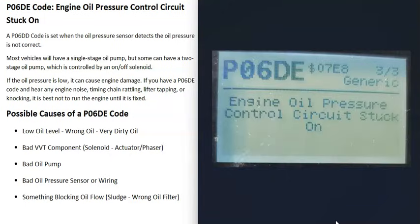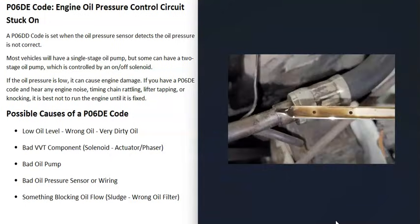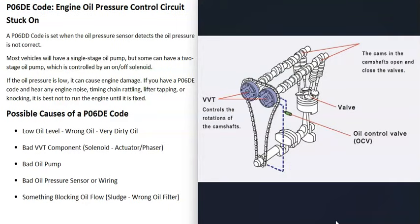As for possible causes of a P060E code, the first thing to do is check your engine oil. If the engine oil is low, really dirty, or possibly the wrong oil was added, that's going to cause problems. So the first step is always to check your engine oil.